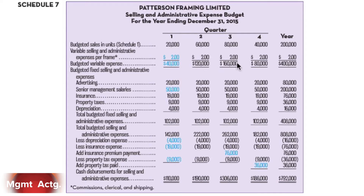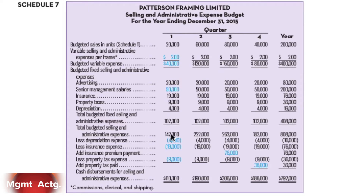Our variable selling and admin expense is two dollars per frame, giving us our budgeted variable expense for the four quarters. This is followed by a list of budgeted fixed selling and administrative expenses: advertising at twenty thousand per quarter, senior management salaries constant at fifty thousand per quarter because they're fixed, insurance constant per quarter, property tax, and depreciation — giving us total budgeted fixed selling and administrative expenses.